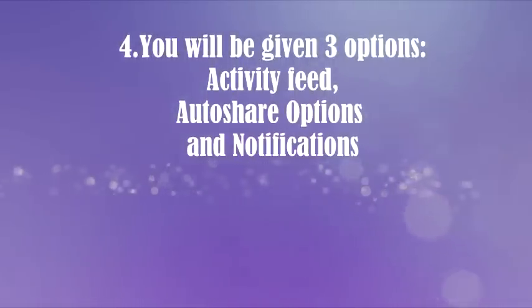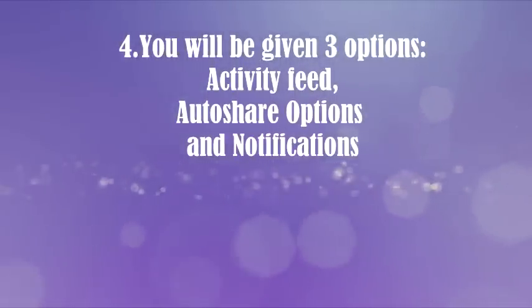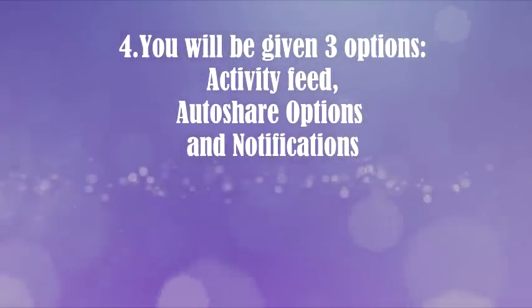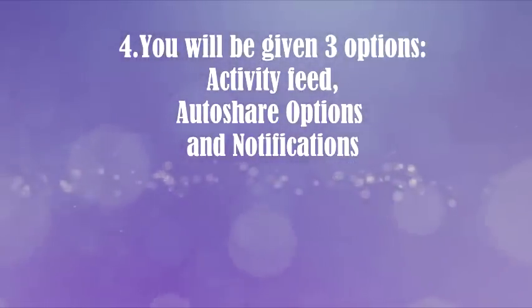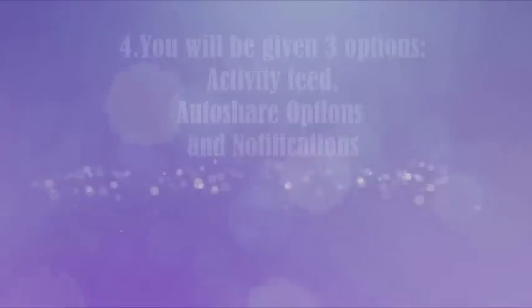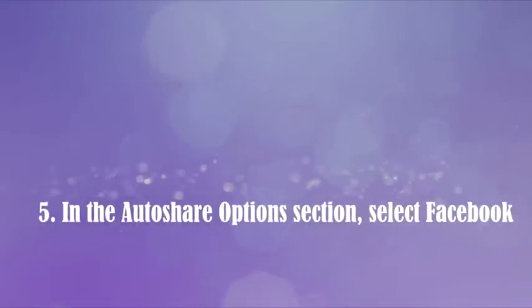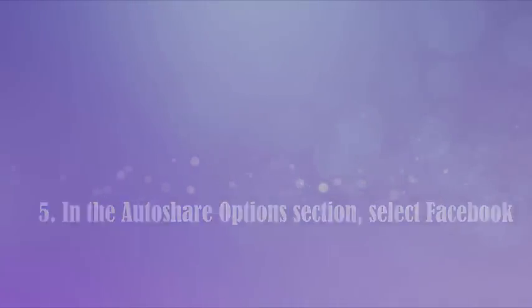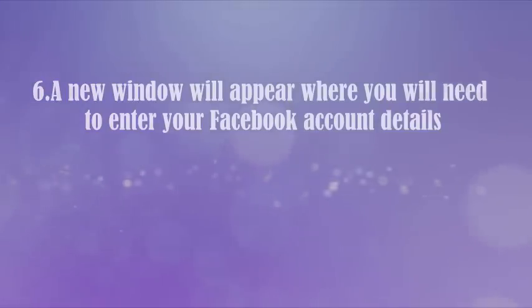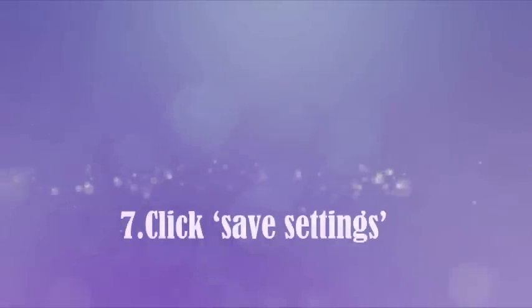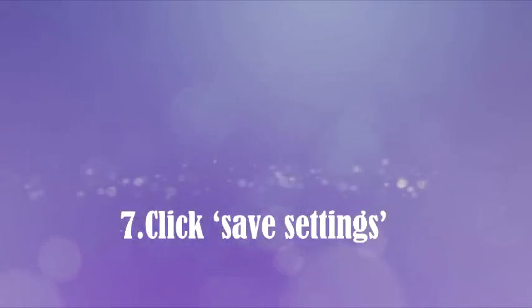You'll be given three options: Activity Feed, Auto Share Options, and Notifications. In the Auto Share Options section, select Facebook. A new window will appear where you'll need to enter in your Facebook account details. Click Save Settings. Now your YouTube and Facebook accounts are connected.